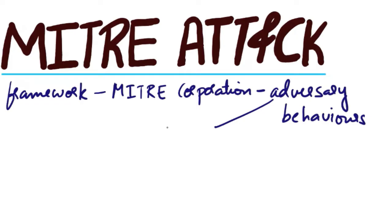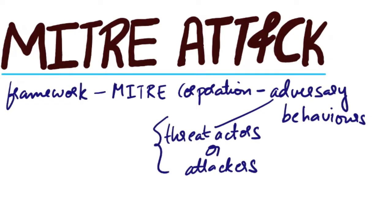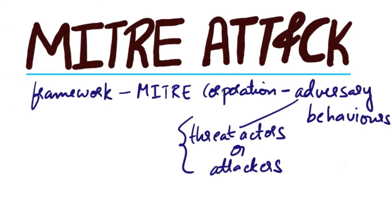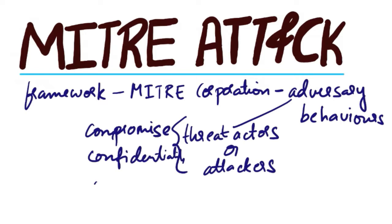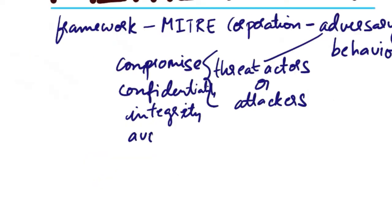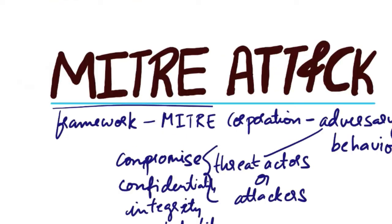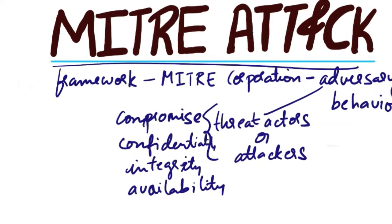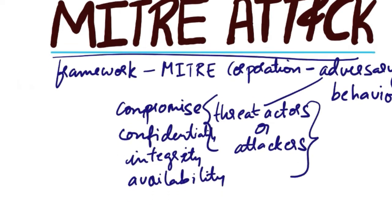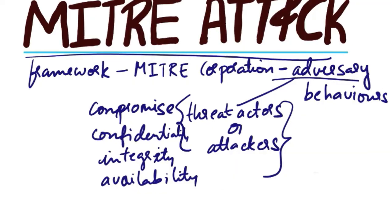Adversaries are also known as threat actors or attackers. They refer to an individual, group or organization that seeks to compromise the confidentiality, integrity or availability of computer systems, networks or data for malicious purposes. So MITRE ATT&CK provides a structured and comprehensive understanding of threat actors' behavior.